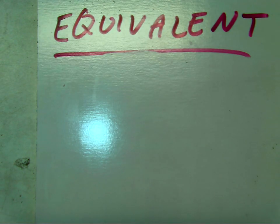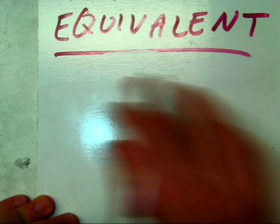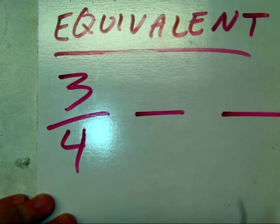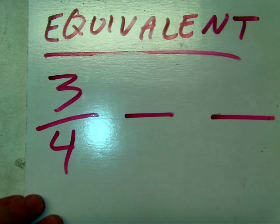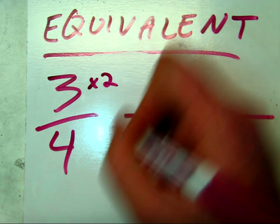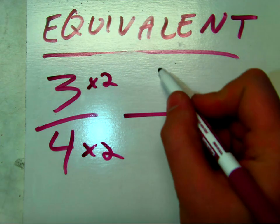So, in order to determine equivalency, we often do lines. So we say, okay, write two equivalent fractions for three-fourths. If I can say, okay, well, three-fourths can also be written as three times two and four times two, which is six-eighths.